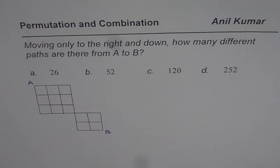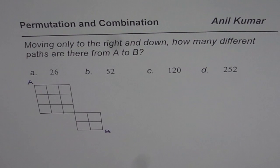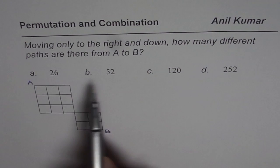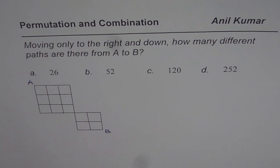I am Anil Kumar and here is a very interesting multiple choice question on permutation and combination. Moving only to the right and down, how many different paths are there from A to B? That is the diagram for you and these are four choices. Now let us see how to do such questions.